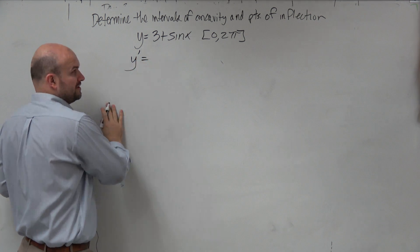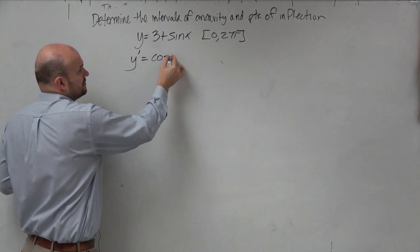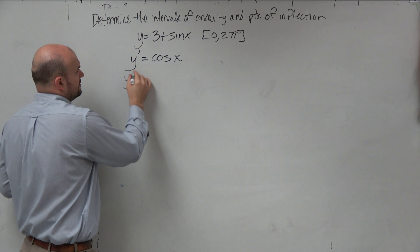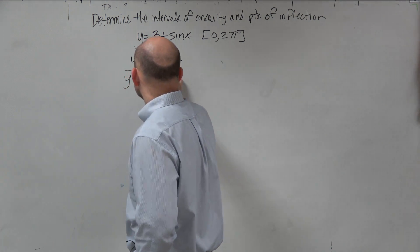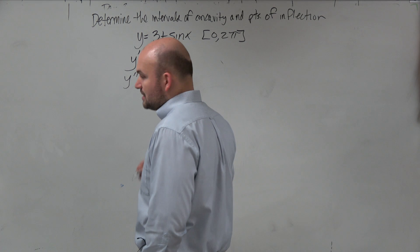The first thing we need to do is find the first derivative. So that's going to be cosine of x. Second derivative is going to be negative sine of x.